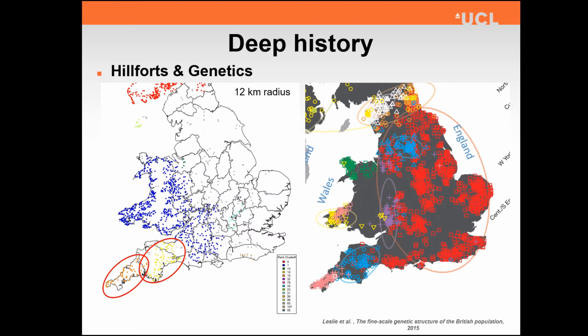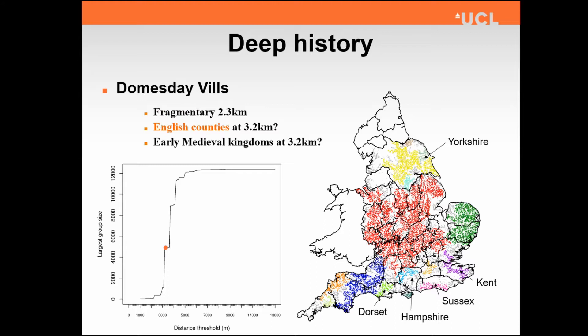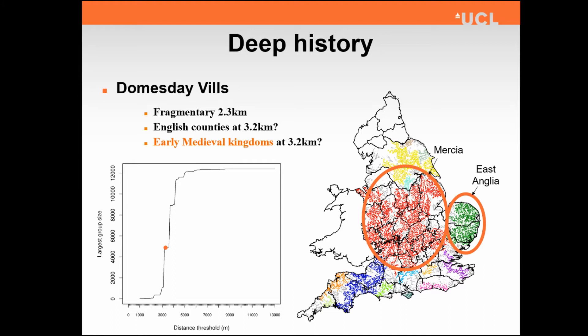Looking at Domesday mills, we've got a much bigger data set here — nearly 13,000 points. Because they're much denser, we're looking at a much more fine-grained clustering, going in 0.1 kilometre increments. Nothing much seems to be interesting at 2.3, but at 3.2 kilometres we're definitely picking out clusters that match county boundaries. Interestingly, what we're also seeing is a reflection of early medieval kingdoms. So again, our clustering is picking up material for interesting investigation.